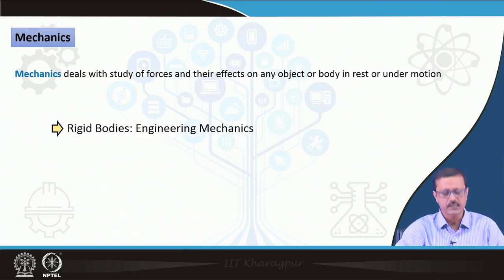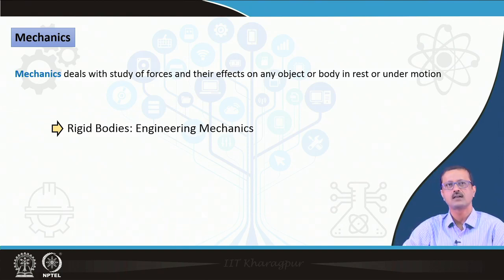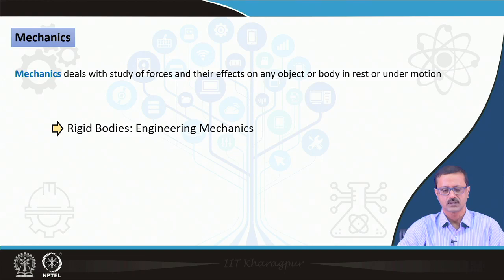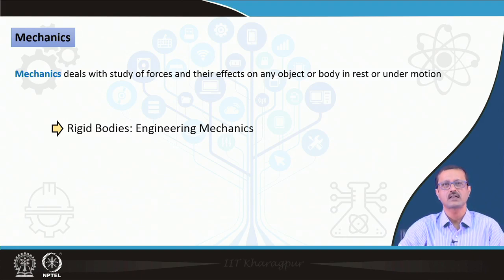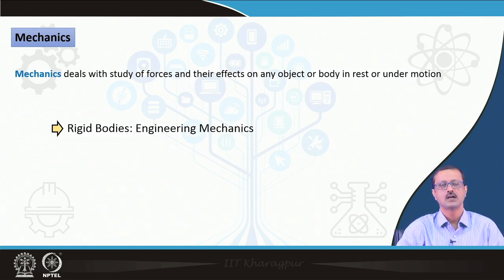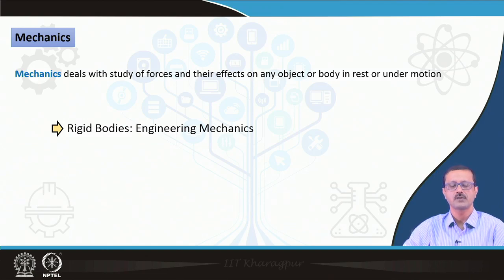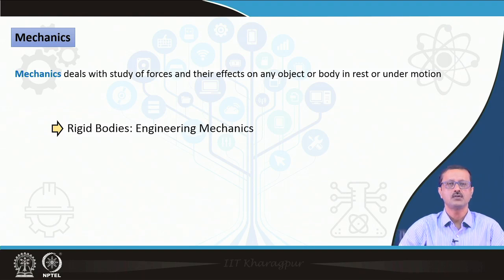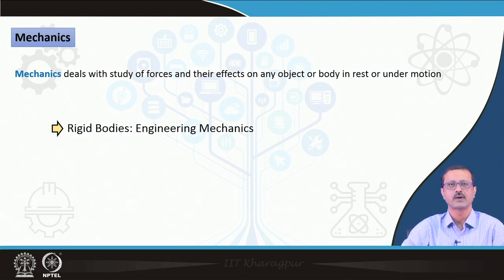Mechanics has three clear boundaries or types. The first is called engineering mechanics, which deals with rigid bodies. In nature, you cannot find a single object that is purely rigid. Rigid body mechanics is called engineering mechanics, where a force is applied to a rigid object and it imparts some kind of motion — either static or in motion.